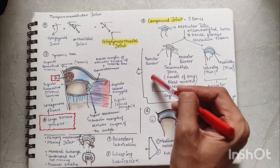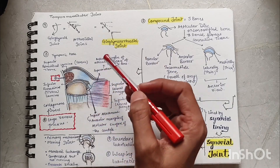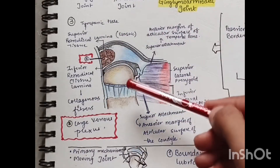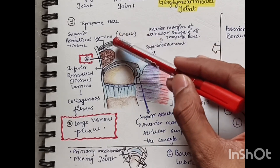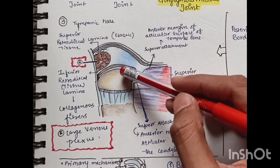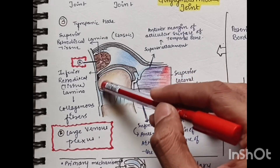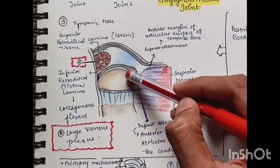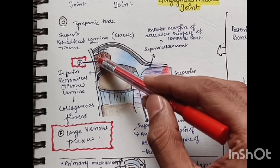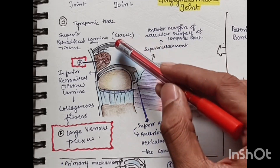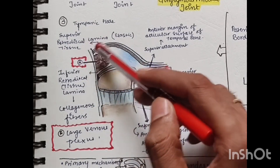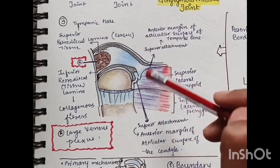In sagittal section, superiorly we have the articular surface of the temporal bone, and inferiorly we have the articular surface of the condyle. In between them is the disc. The disc is attached posteriorly to the posterior lamina and anteriorly to the anterior lamina.